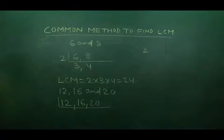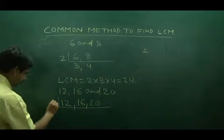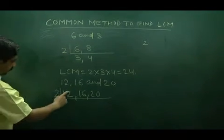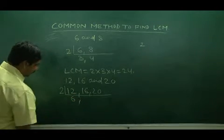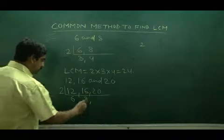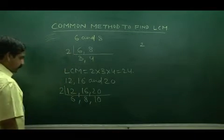Divide them by least prime number. The least prime number is 2. When 12 is divided by 2, this is 6. Similarly, 16 by 2 is 8 and 20 by 2 is 10.